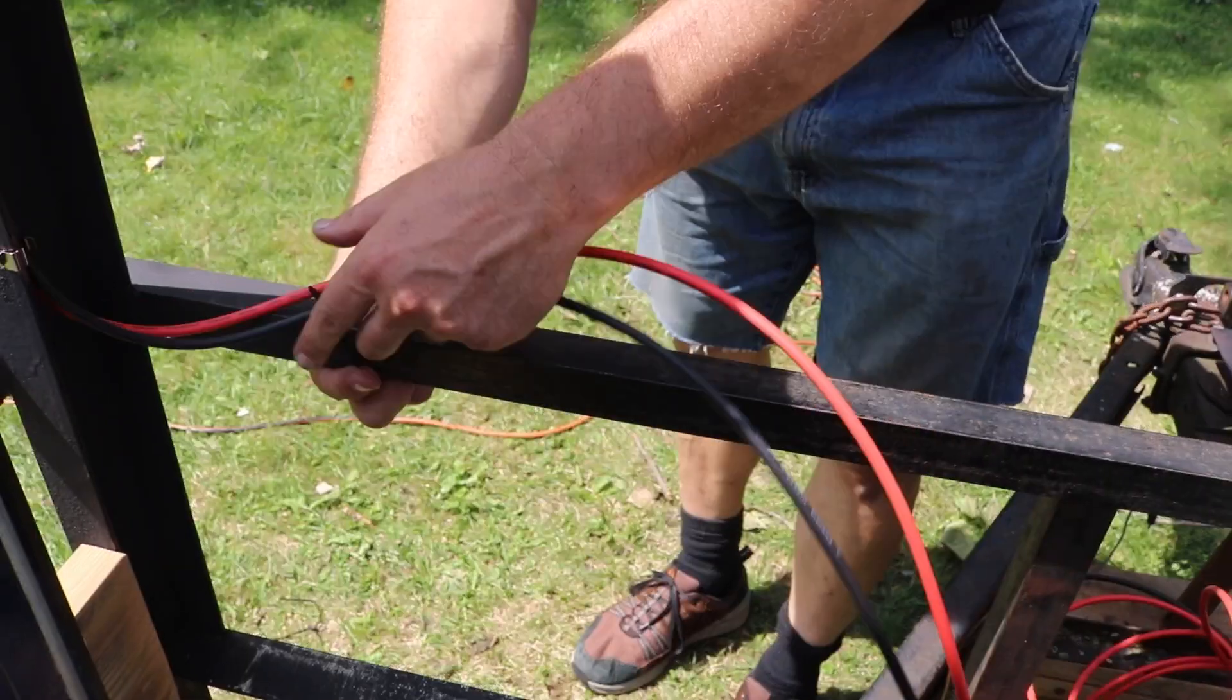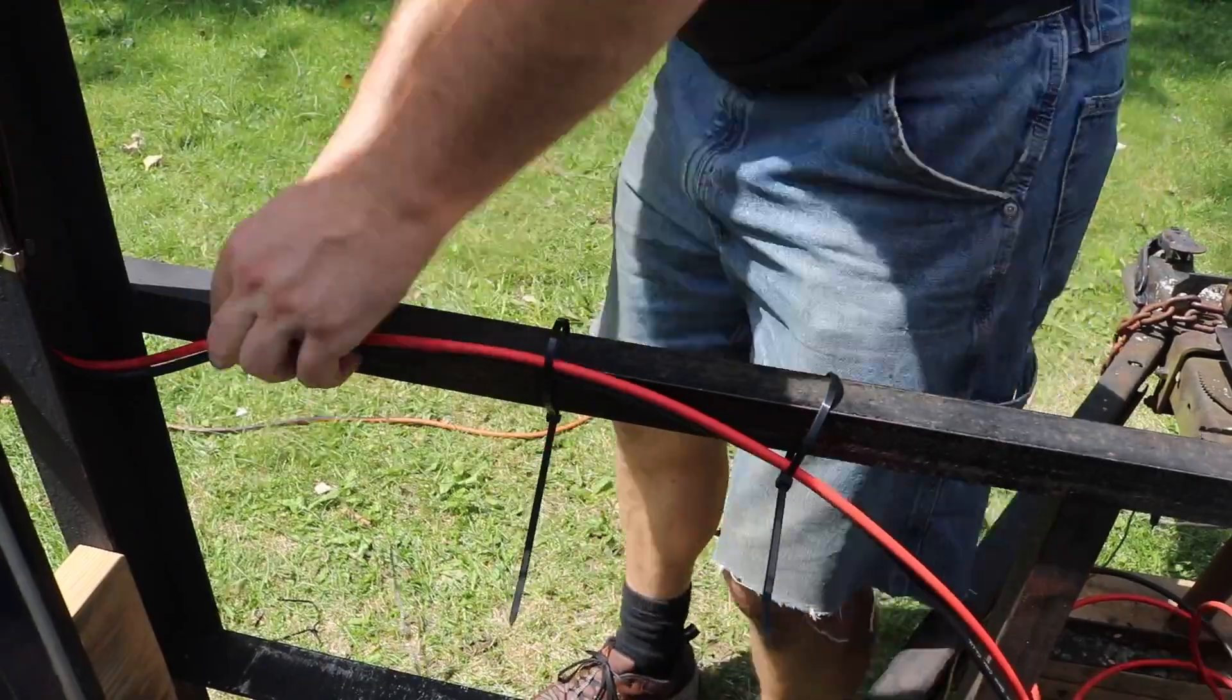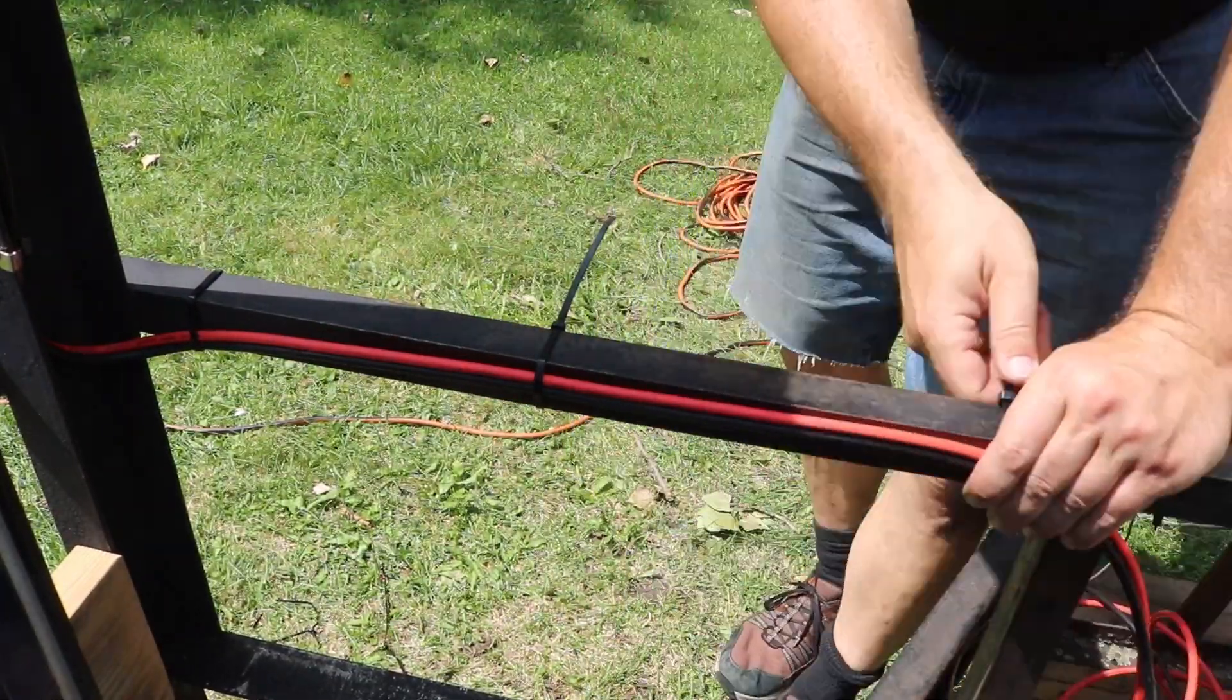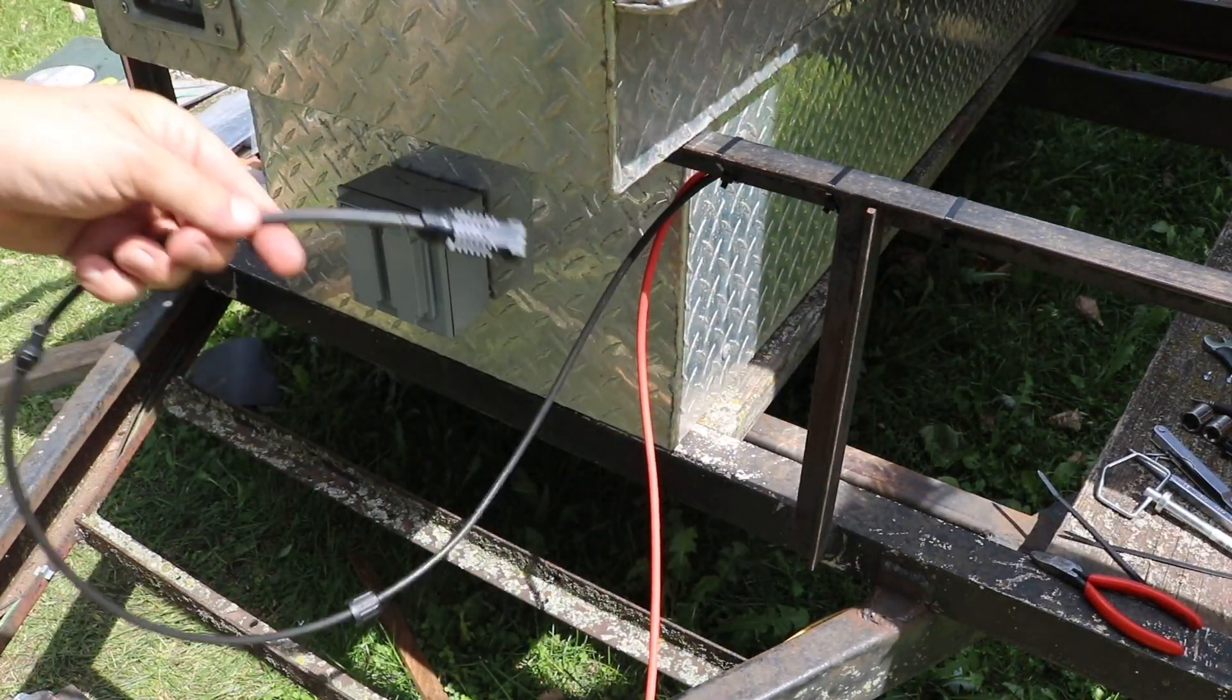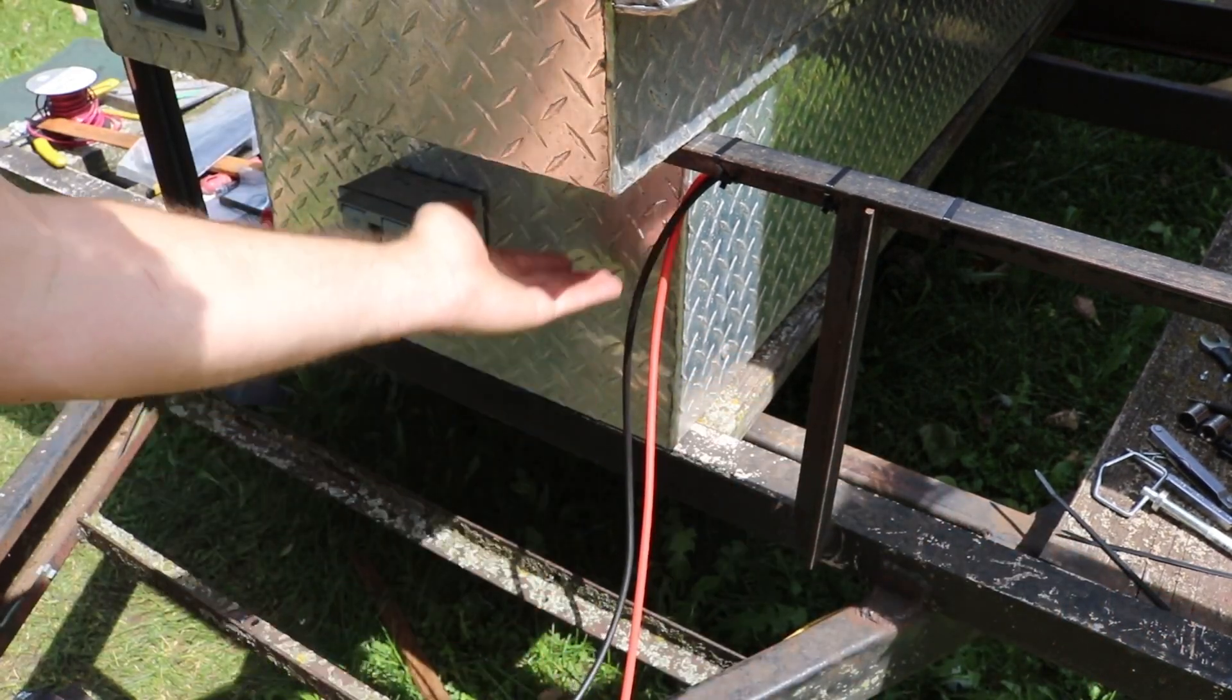Next I ran the wiring down the upright and then across this rail towards the toolbox. Now I don't have a whole lot to spare here, so I'm going to cut this cable right up at the connector and then I can feed it through that cable gland.